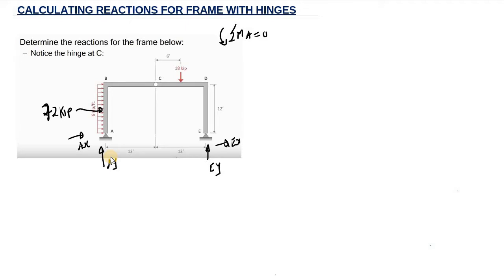We are going to assume all moments in the counterclockwise direction to be positive while all moments in the clockwise direction are negative. If EY acts upward, relative to the pin support at A, it is going to try to rotate this frame in the counterclockwise direction. So this is positive EY, multiplied by the distance. The distance from EY to the pin support at point A is 24 feet, because this is 12 plus 12.